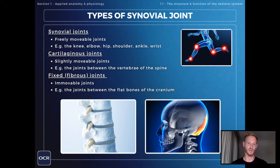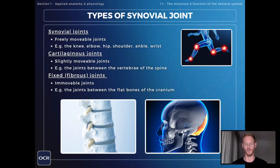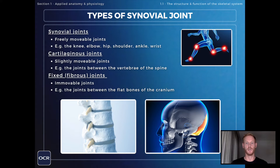There are also fixed joints, which are completely immovable and don't provide any movement at all, like the joints between the flat bones of the cranium. You don't actually need to know the definitions of cartilaginous or fixed joints, but they're included here just to provide a little bit of context.